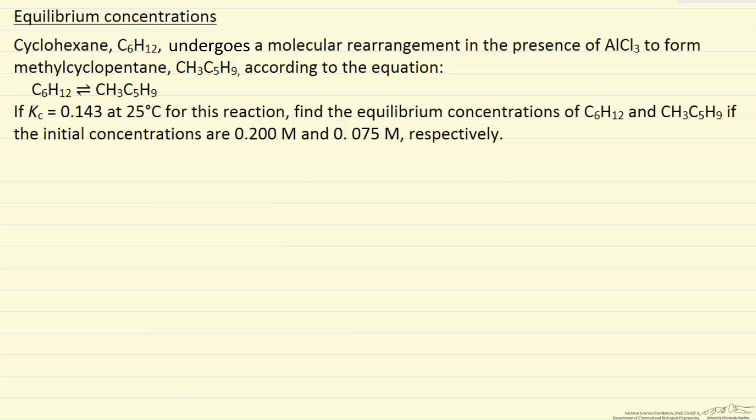First thing we want to do, let's look at this reaction that's in equilibrium. It's always good to write down information that we know: our starting concentrations, cyclohexane and then methyl cyclopentane. That's the start, and then we're going to let it go to equilibrium.